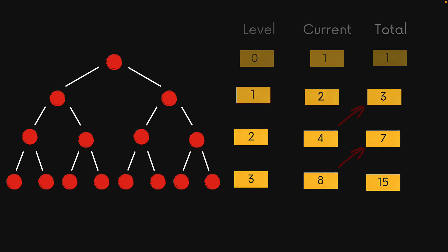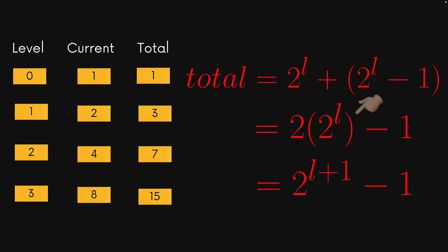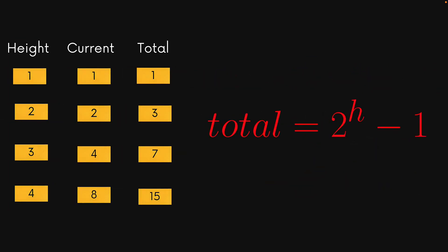Now armed with these observations, we can write the formula for the total at any given level as 2 to the power l — the current number of nodes — plus 2 to the power l minus 1, that is the number of nodes from the previous total. As an example, consider level 3 where we have 8 current nodes (2 to the power 3) combined with 7 nodes (2 to the power 3 minus 1), resulting in a total of 15. We can combine the two 2-to-the-power-l terms to get 2 to the power l plus 1. We've been working with zero-based indexing for the level, but we can take l plus 1 and define a new concept known as the height of a tree, which is simply l plus 1. So we have a nice relationship between the height of the tree versus the number of items that it can accommodate.